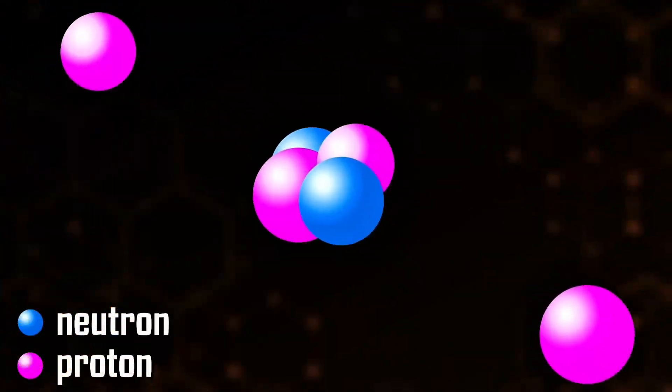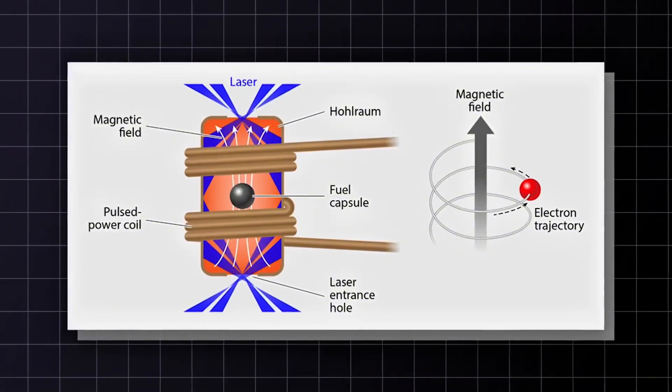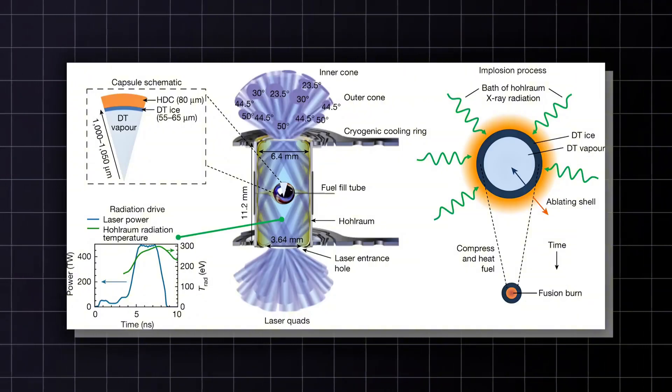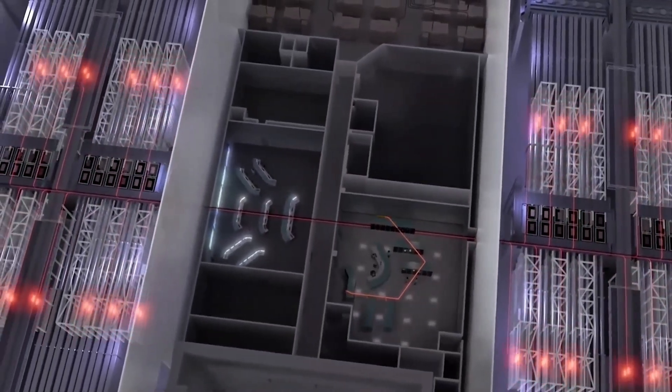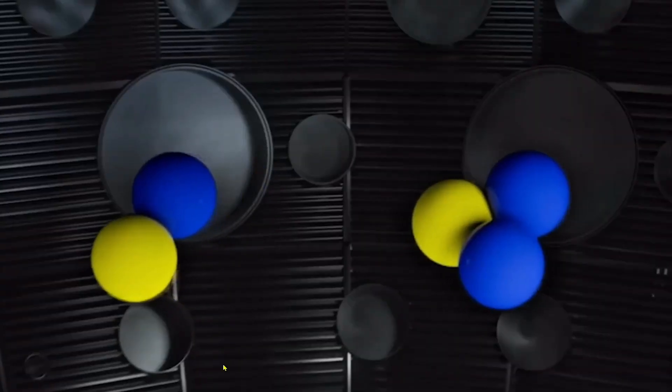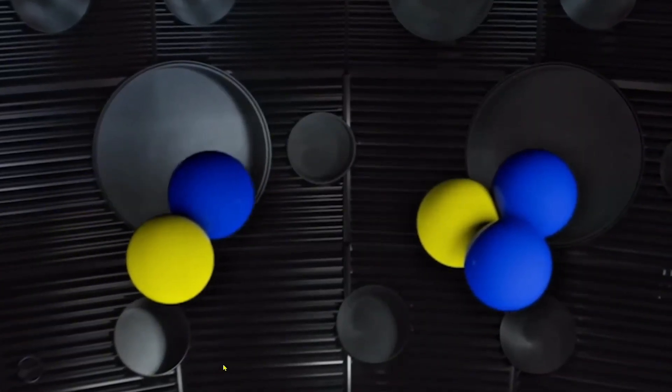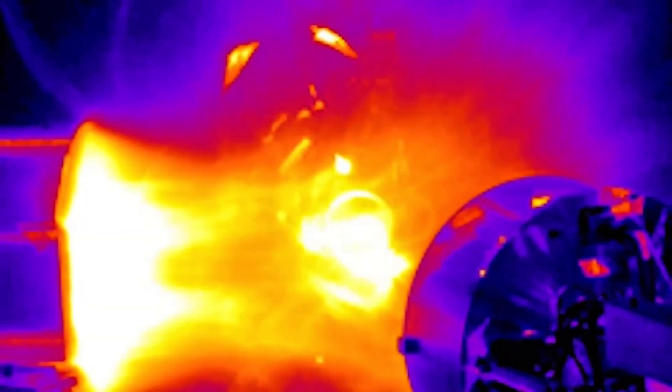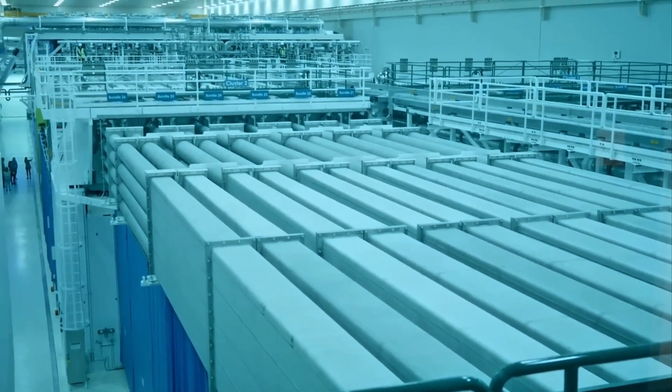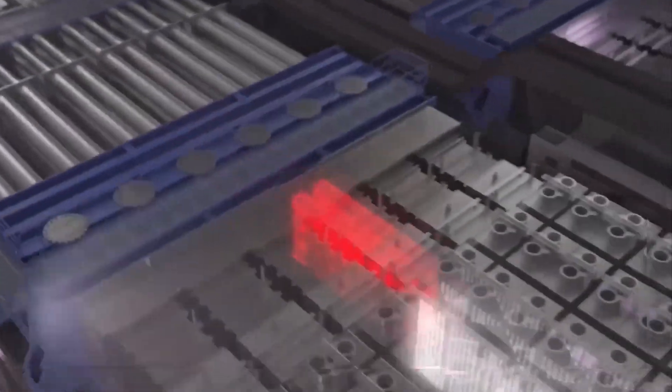Because a stellarator does not rely on a plasma current, it avoids the instabilities and disruptions that tokamaks face when that current becomes unstable. In principle, a stellarator can operate in a steady continuous mode, which would be ideal for a power plant. Early stellarators struggled with plasma leakage and confining the heat for long durations, but advances in design and computation have improved this dramatically. Today's stellarators, like the Wendelstein 7-X in Germany, have shown that it is possible to achieve very long plasma pulses with good performance.